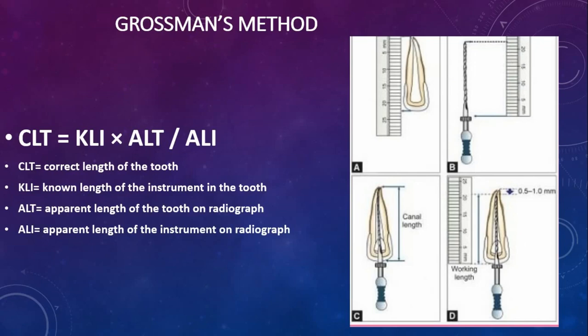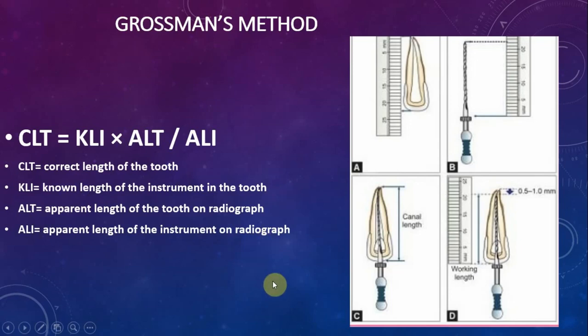In Grossman's method, a pre-operative radiograph is taken and then a file is placed inside the canal for a second radiograph. The correct length of the tooth is calculated by the formula: Correct length = (known length of instrument in tooth × apparent length of tooth on radiograph) ÷ apparent length of instrument on radiograph.